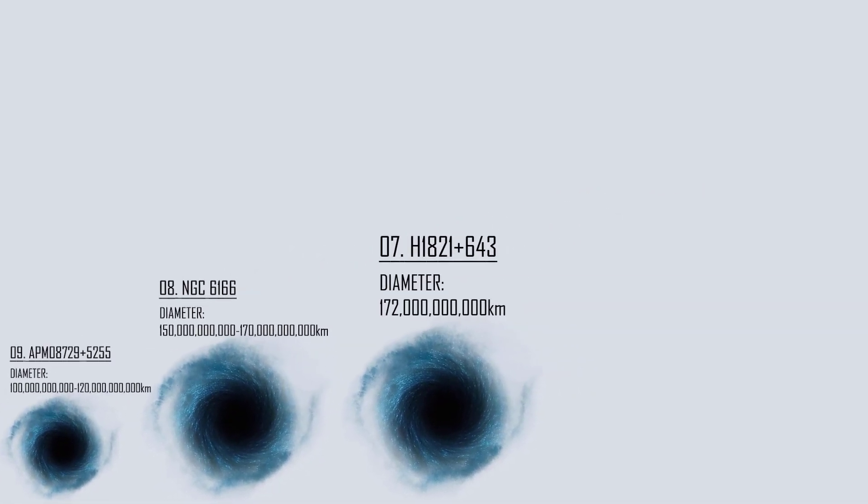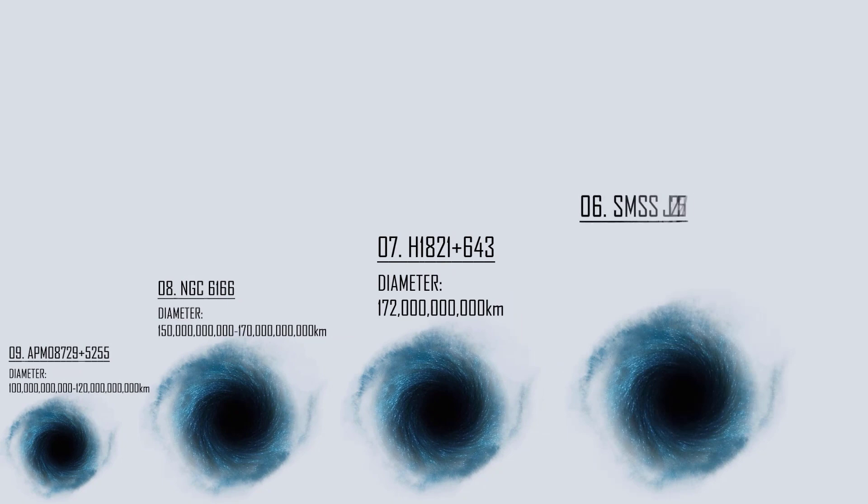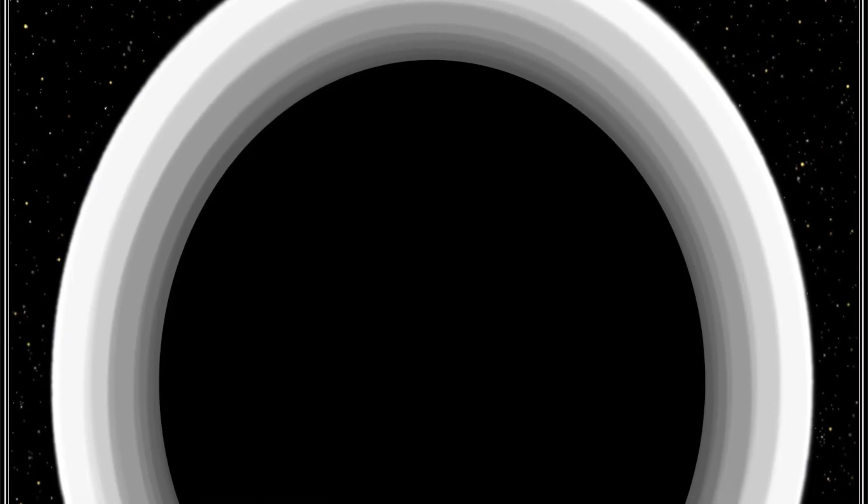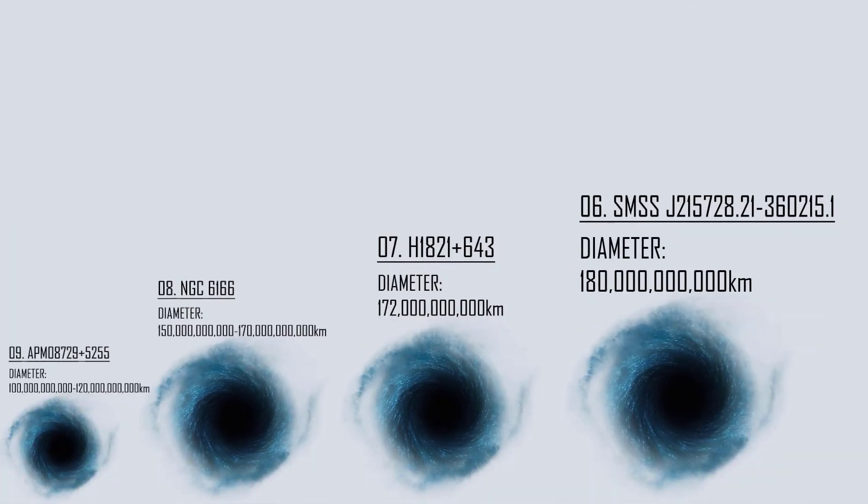Number 6: SMSS J215728.21-360215.1. Commonly known as J2157-3602, it is one of the fastest growing black holes and one of the most powerful quasars known to exist as of 2021. In July 2020, the ultra-massive black hole associated with the quasar was reported to be 34 billion solar masses, based on a study published in the monthly notices of the Royal Astronomical Society.